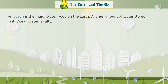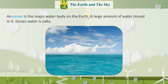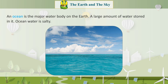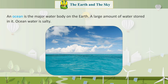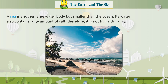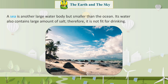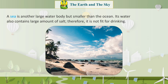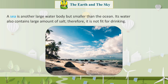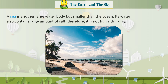Ocean: An ocean is a major water body on the earth. A large amount of water is stored in it. Ocean water is salty. Sea: A sea is another large water body but smaller than the ocean. Its waters also contain a large amount of salt.